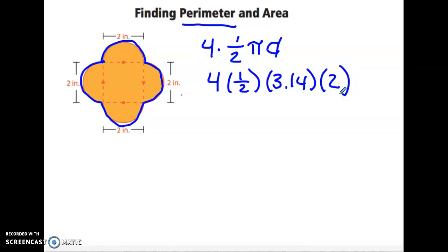Put that into your calculators, and we get the perimeter or distance around the shape is 12.56 inches.